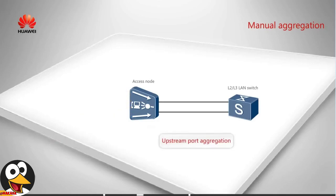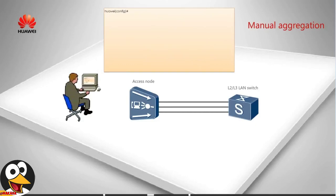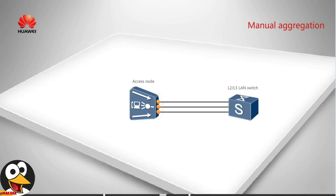We'll use the upstream port aggregation of the access device as an example to describe how to configure manual aggregation. Configure an aggregation group for each device on both link ends. The following configuration is performed on the access device. First, select ports for the aggregation group, such as two ports on slot 19 and one port on slot 20. Second, select a packet transmission mode, for example, ingress. You do not need to configure the aggregation mode because it defaults to manual aggregation. Perform similar configuration on the upper layer device.